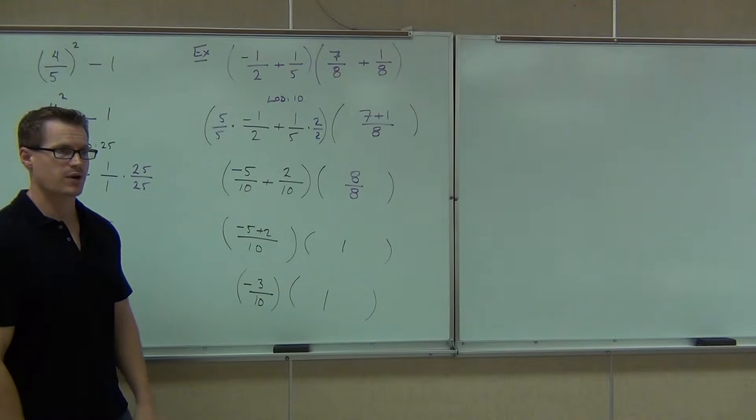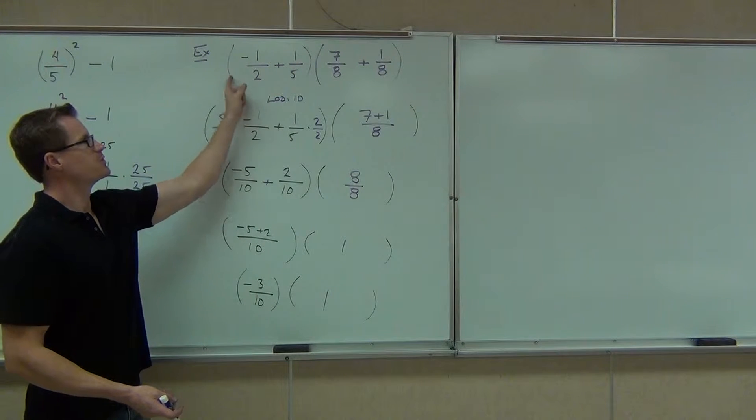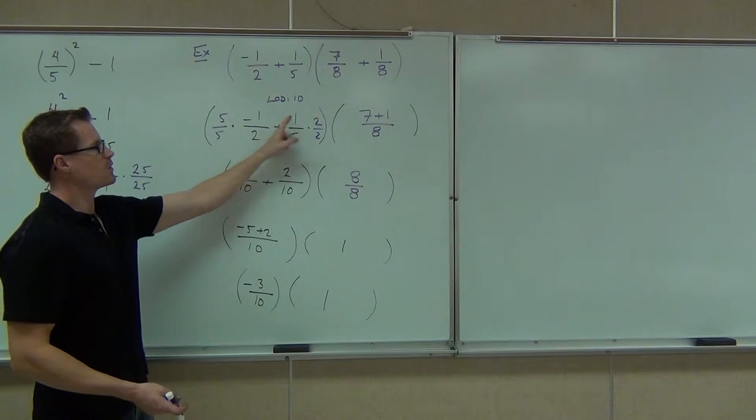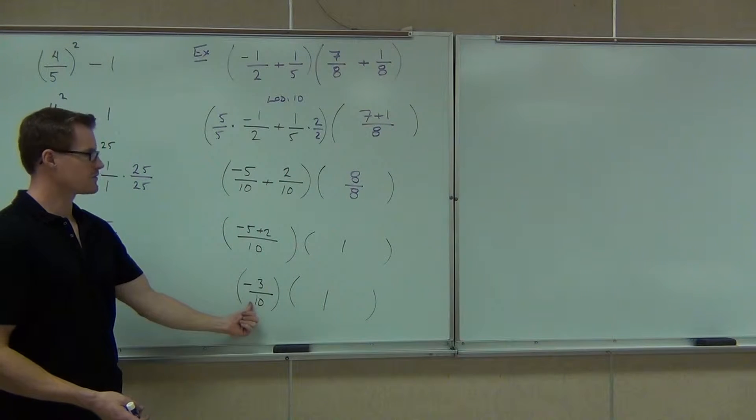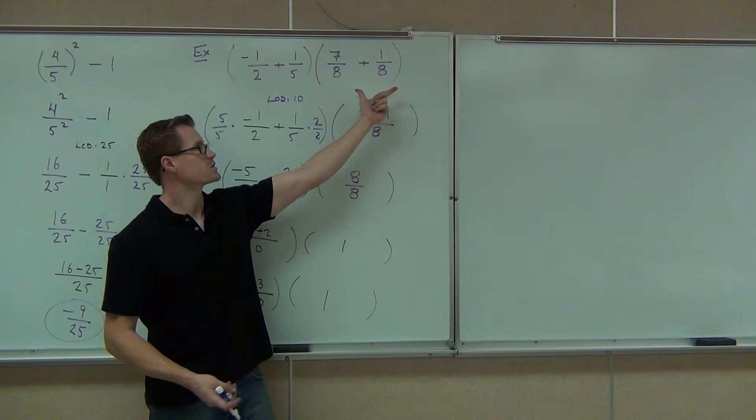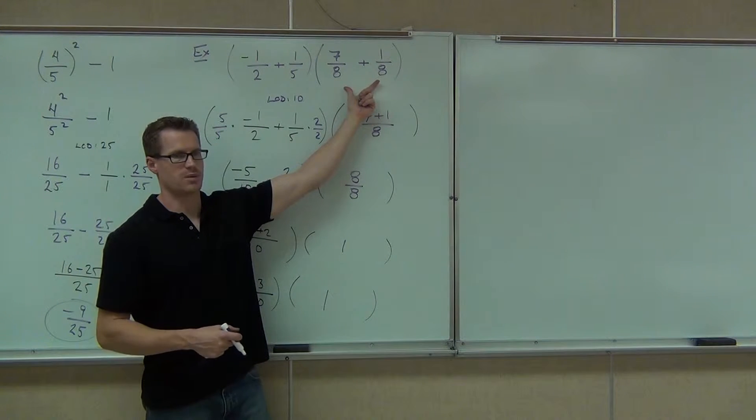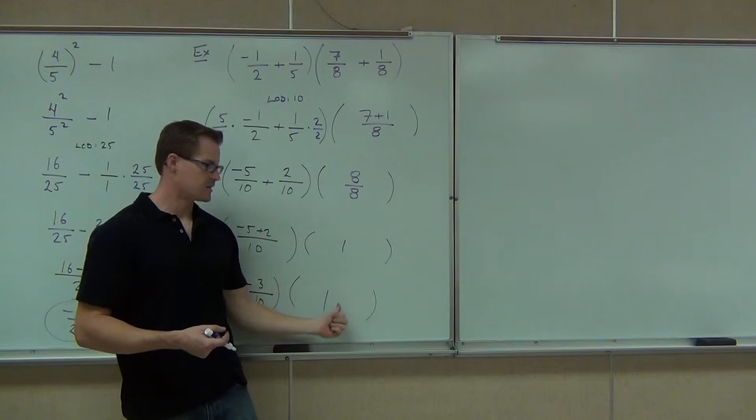We didn't really change anything on the right fraction from there to there. So here we've found our LCD after moving our negative to the numerator. We've used the LCD to find equivalent fractions. We have added those fractions together. We get negative 3 tenths. The other fraction was a little bit easier. We had 7/8 plus 1/8. They already had a common denominator. We make those one fraction. We add. We simplify. It's still 1.